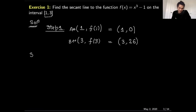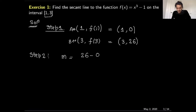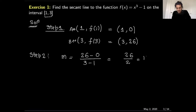In step number two, we calculate the slope of the secant line. The slope is the difference of y-values divided by the difference of x-values: 26 minus 0, divided by 3 minus 1. This gives us 26 divided by 2, which equals 13. So the slope of our secant line is 13.